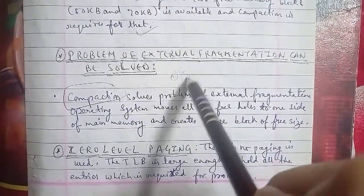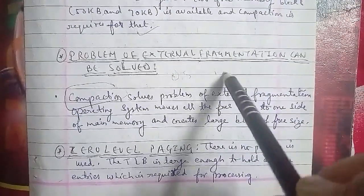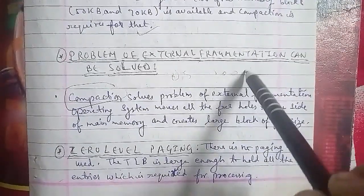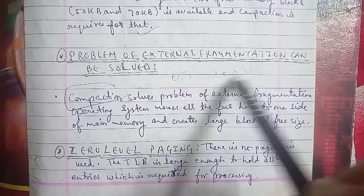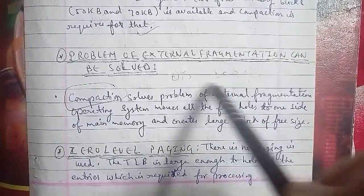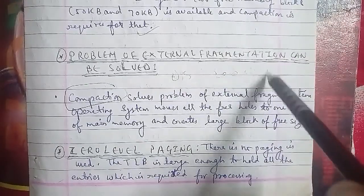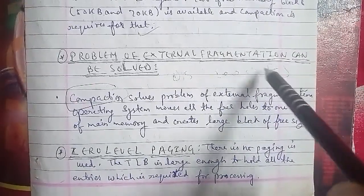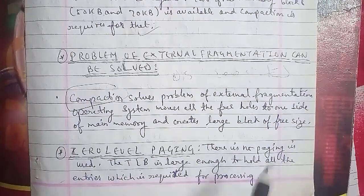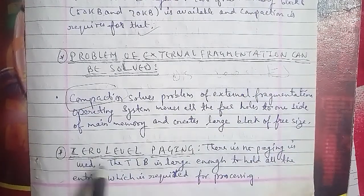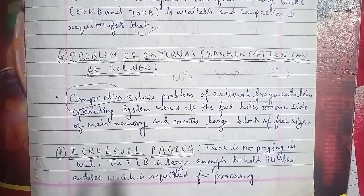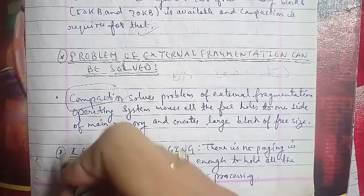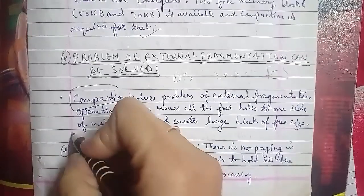Moving ahead, we have zero-level paging. What is zero-level paging? In zero-level paging, there is no paging used. The TLB is large enough to hold all the entries required for processing.